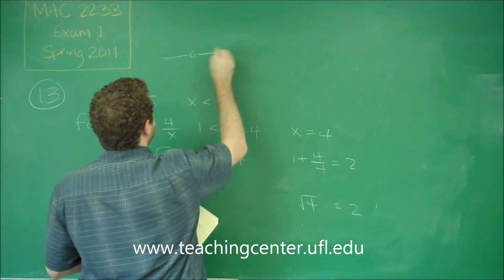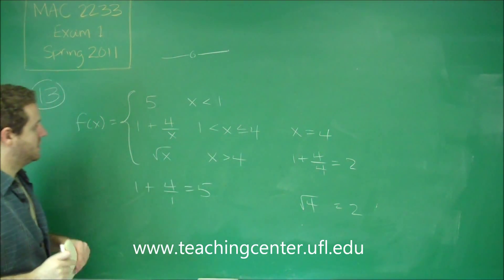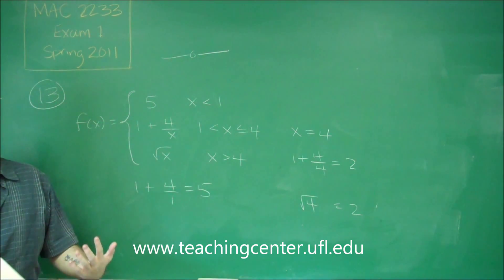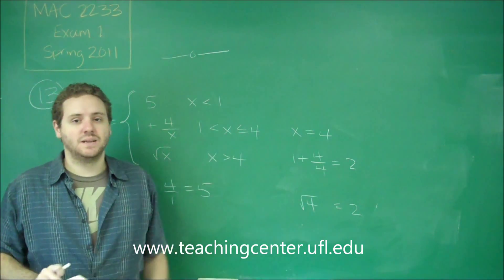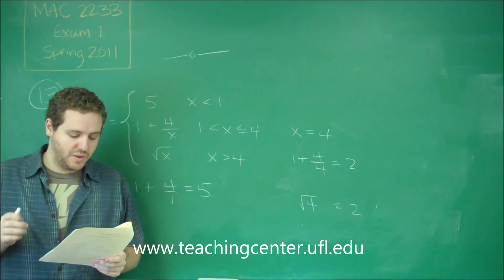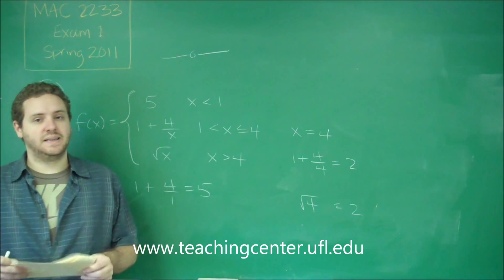So remember, this situation is what happened at 5, because they both met at the same point, but the point wasn't there. In this case, the point is there. That means it's continuous. So 3 is true also. So we got 1 is true and 3 is true, which is answer choice E.